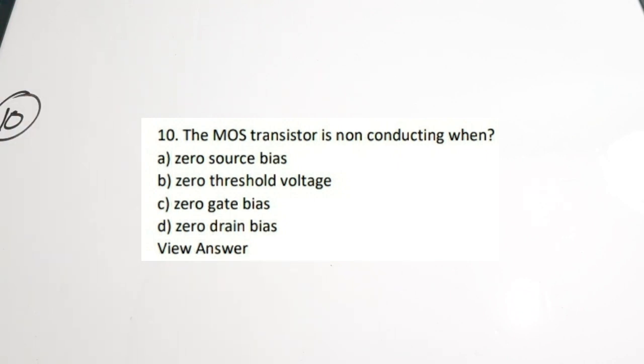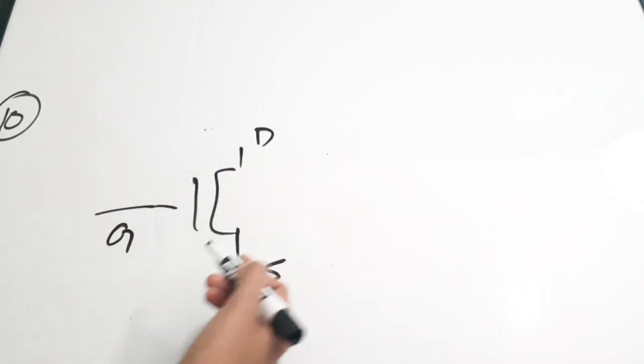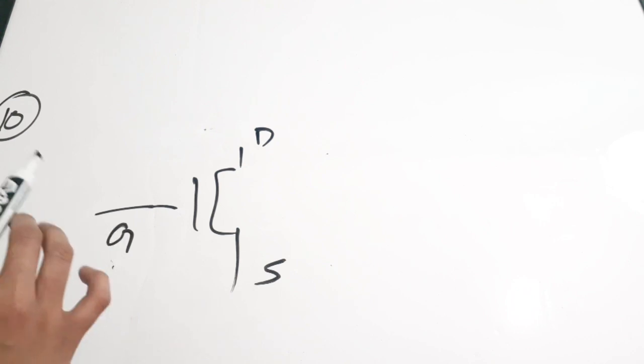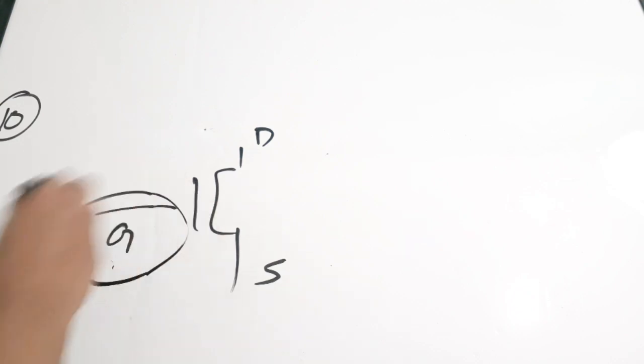Tenth question: The MOS transistor is non-conducting when dash. Options: A - Zero source bias, B - Zero threshold voltage, C - Zero gate bias, D - Zero drain bias. The gate input voltage should be greater than the threshold voltage — only then the device will start to conduct. The gate is the input terminal, so the gate bias should be greater than the threshold. The MOS transistor is non-conducting when zero gate bias — when the gate bias is zero, the device is in a non-conducting state. Correct answer is C.